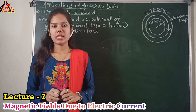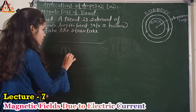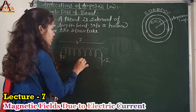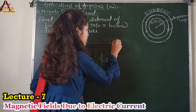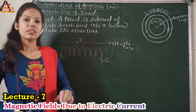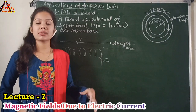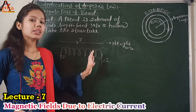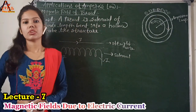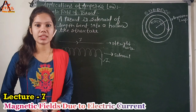A solenoid starts as a straight wire. We bend that straight wire into circular loops — current flows through them. Each loop creates its own individual magnetic field, and the resultant structure is called a solenoid. But suppose that solenoid creates a magnetic field that doesn't fulfill our requirements — we need more magnetic field.